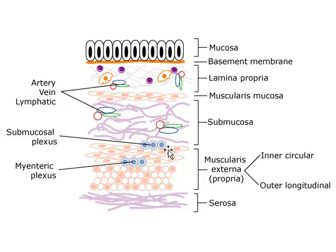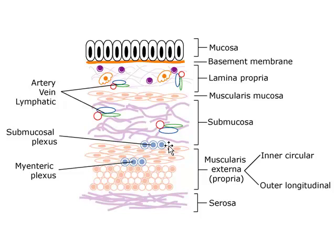The next layer is called the muscularis externa, and this is a double layer of smooth muscle. Throughout much of the gut, it is composed of an inner circularly oriented layer and an outer longitudinally oriented layer, although there are some variations. An important feature is the presence of two nerve plexuses — small collections of nerve cells found circumferentially around the wall of the gut. The submucosal plexus is found at the junction between the internal circular muscle layer and the submucosa, and the second plexus is found between the inner circular and outer longitudinal muscle layers.